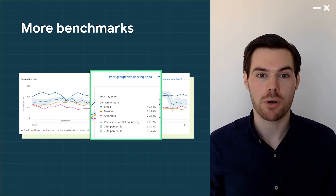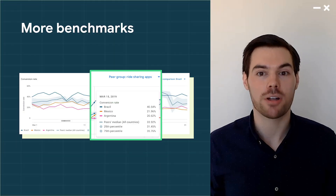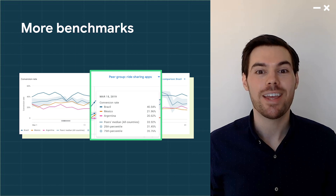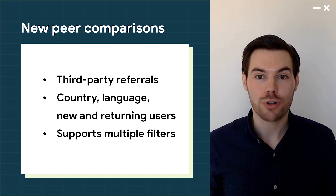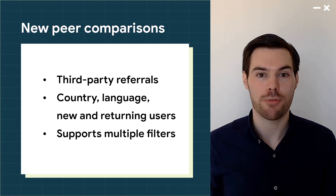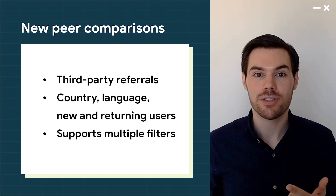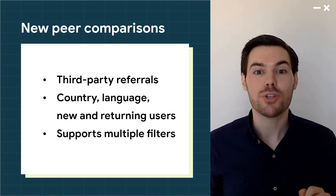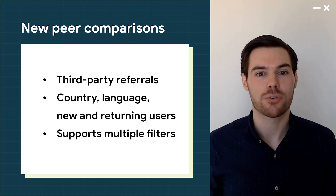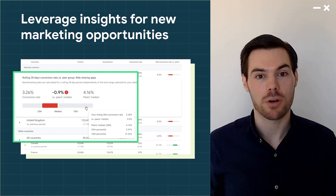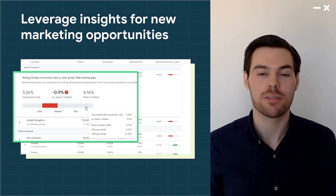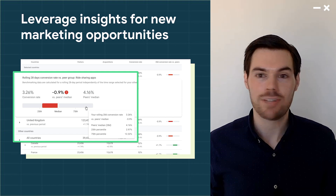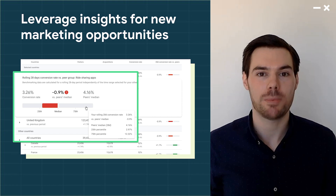Since you told us that benchmarks are important for making effective marketing choices, we'll soon launch extended peer comparisons. This will cover all traffic sources, including third-party referrals, as well as other dimensions and filters, so you can identify targeted areas for growth. We encourage you to use these benchmarks to find new marketing opportunities, like adding new localizations, custom store listings for specific countries, or testing changes with store listing experiments.